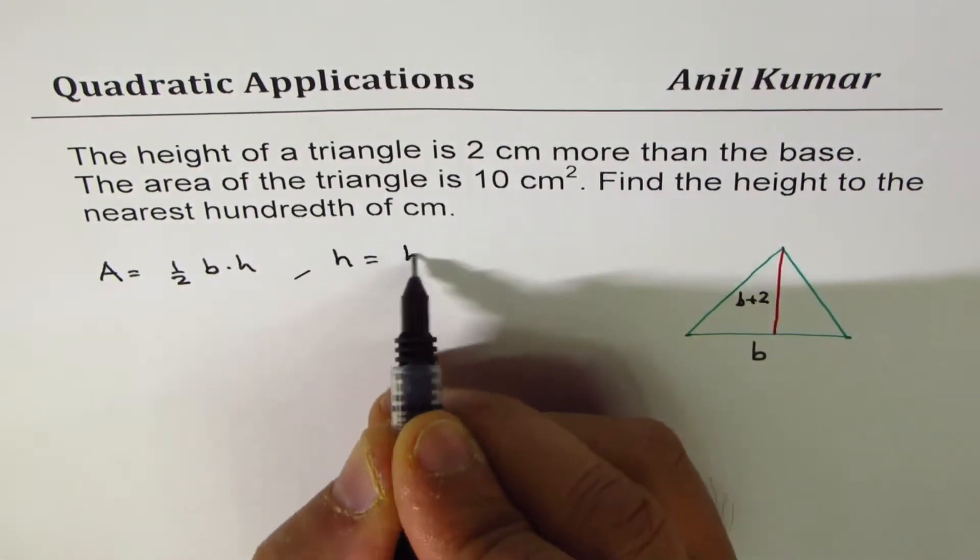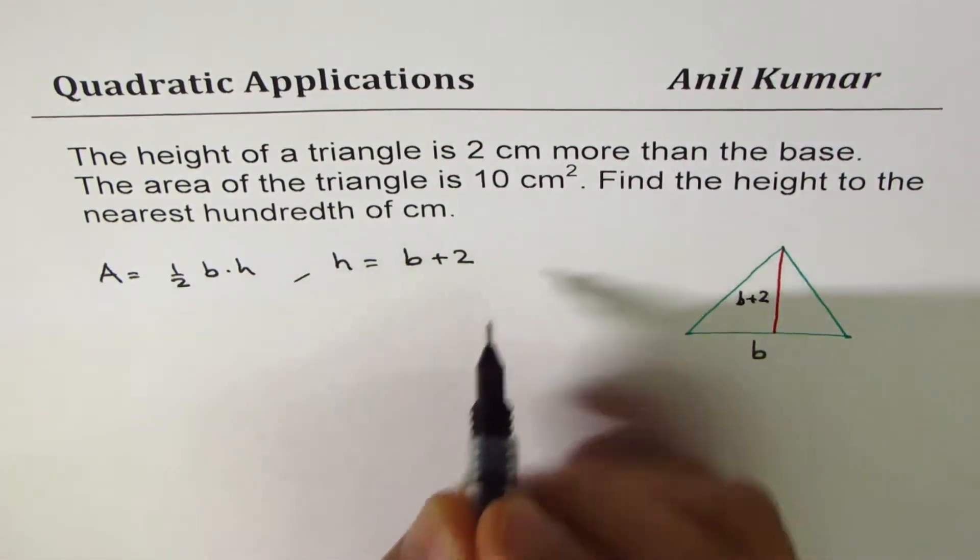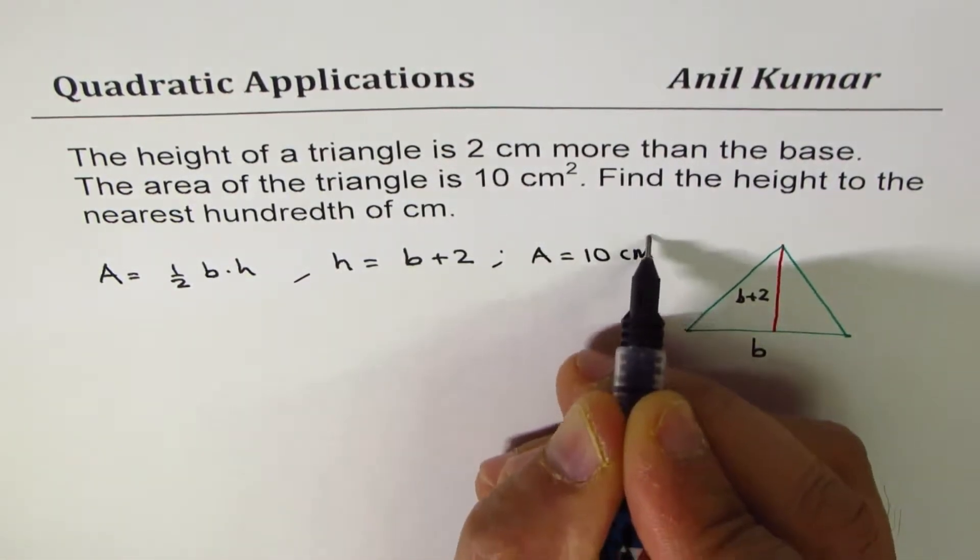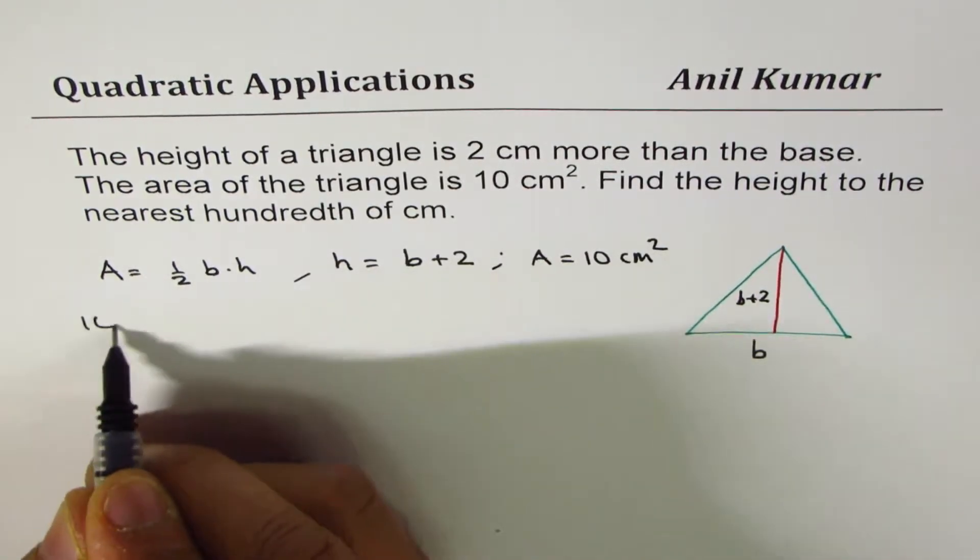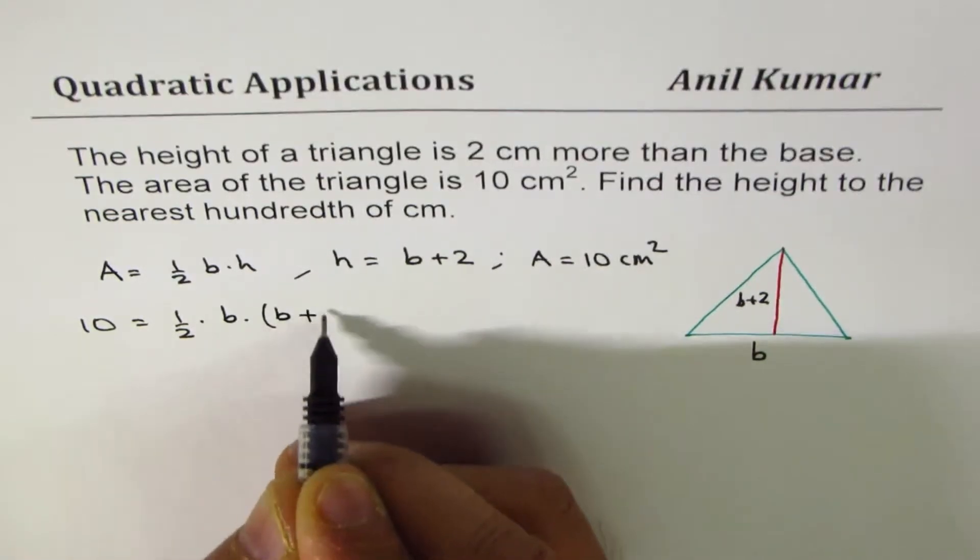Since we know height is b plus 2 we can replace it here and we also know that area is 10 centimeters square. So we'll write 10 for area. We get half base times base plus 2.